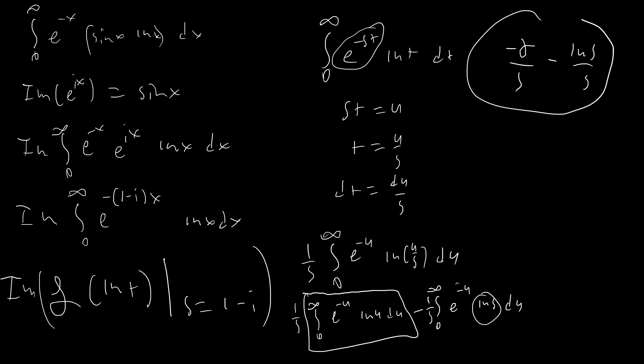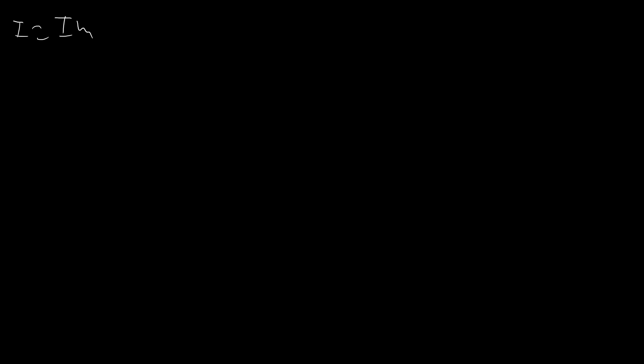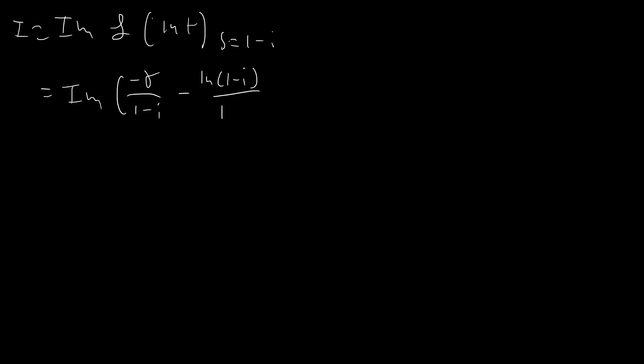So now we plug in s equals 1 minus i. Remember that our integral I equals the imaginary part of the Laplace transform of ln t evaluated at s equals 1 minus i. So this is going to be the imaginary part of: negative gamma over (1 minus i), minus the natural log of (1 minus i), all over (1 minus i).